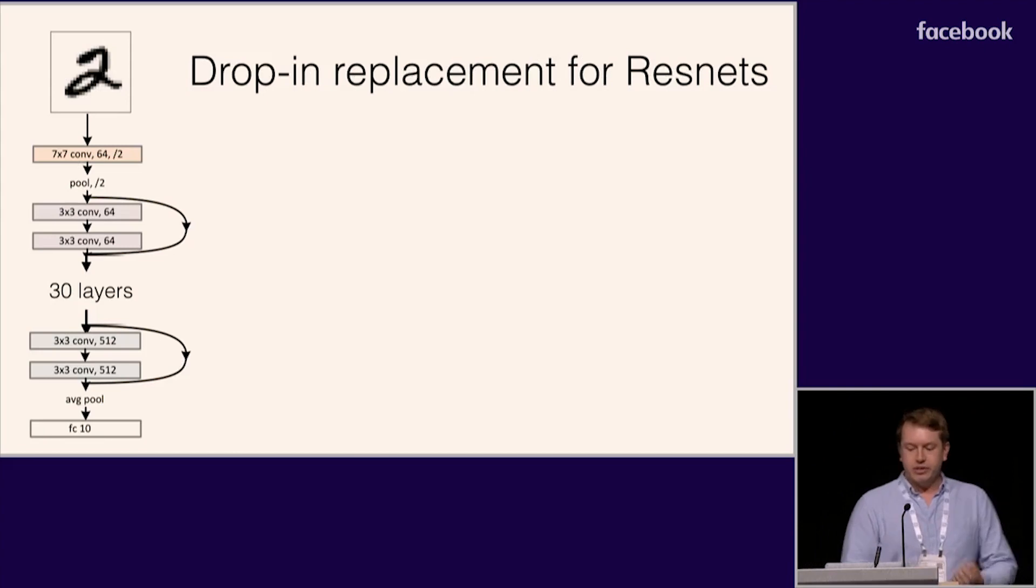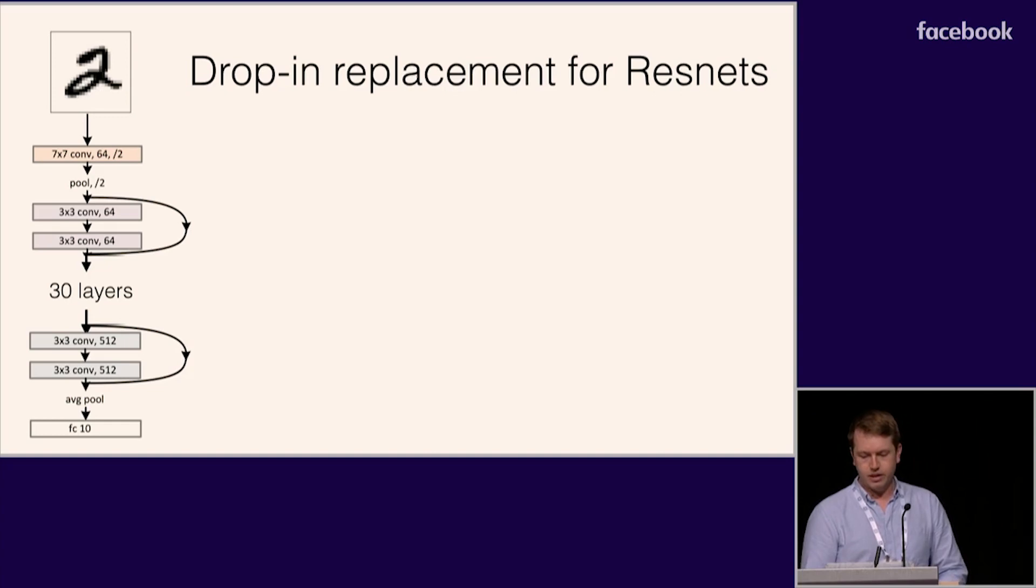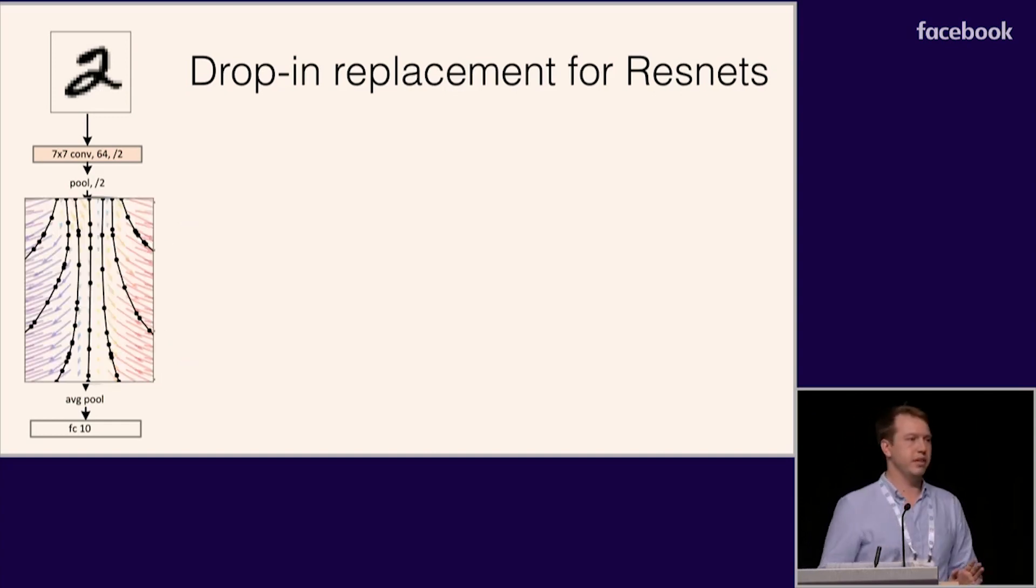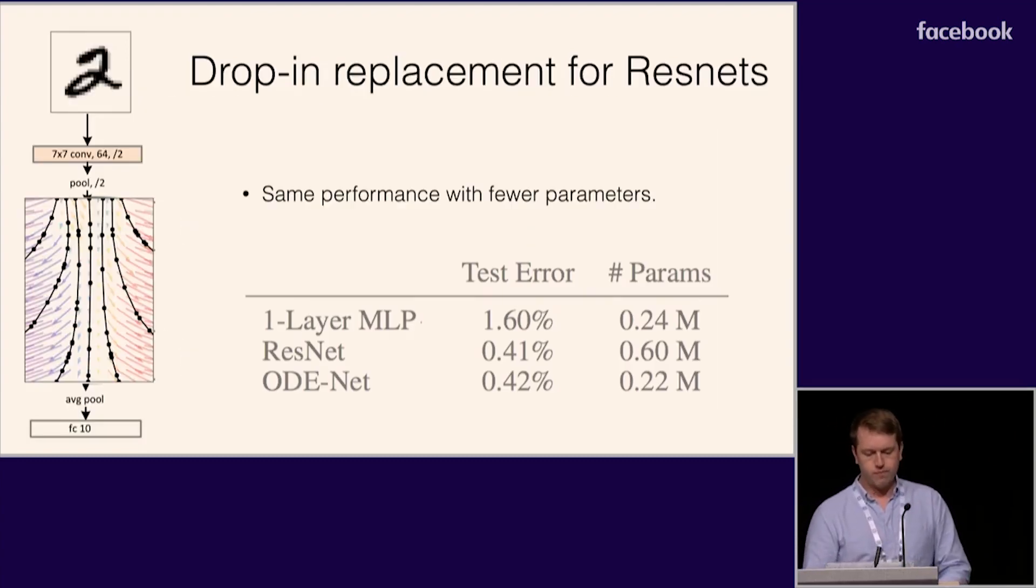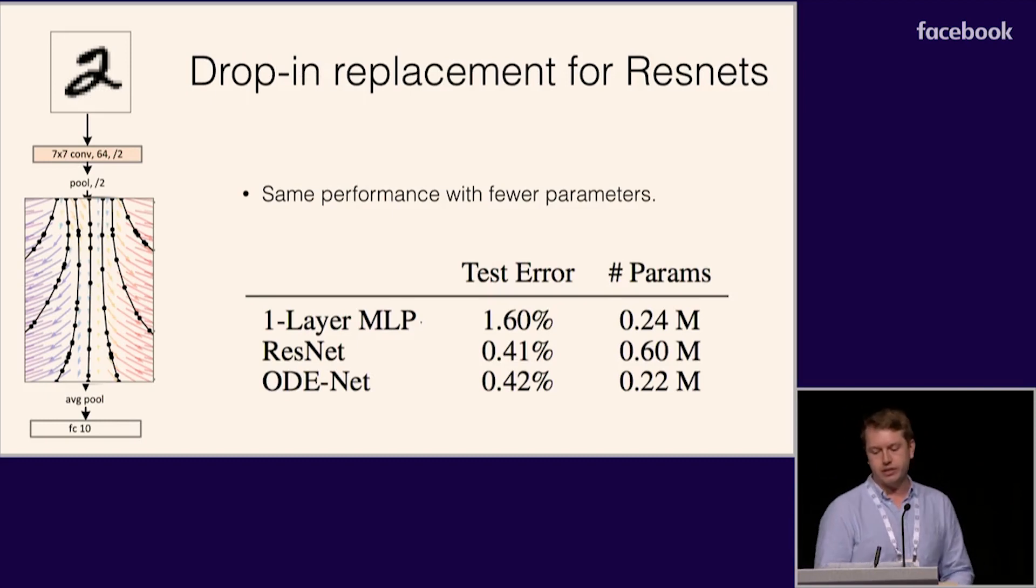So now we have a new differentiable model component that we can put in our models. Anywhere we have a set of ResNet layers, we can replace them all with a single ODE net. Besides constant memory costs, another advantage of ODE nets is that they generally require fewer parameters than ResNets. Because the network dynamics change smoothly with depth, the parameters of nearby layers are automatically tied together. This table shows us using ODE nets to do classification on MNIST and achieving the same test accuracy with about a third of the parameters as ResNets.